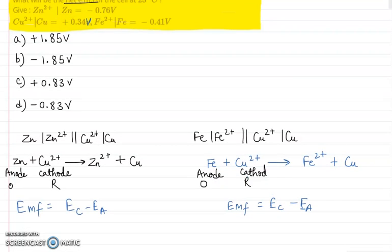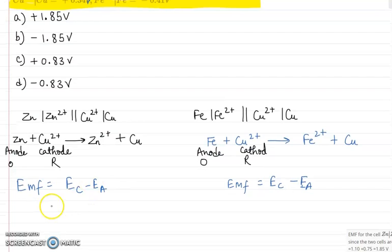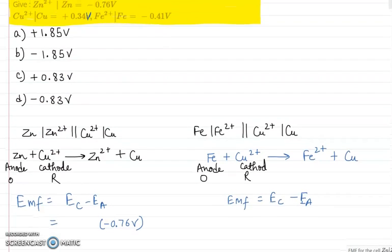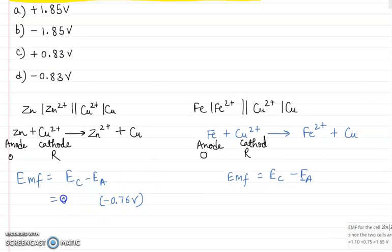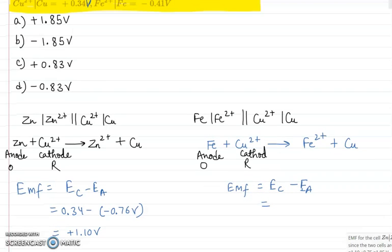We know that for zinc it is minus 0.76 volt and at cathode for copper it is 0.34. Here we have plus 1.10 volt, and like that in case of iron.